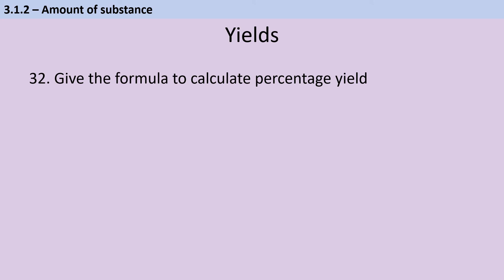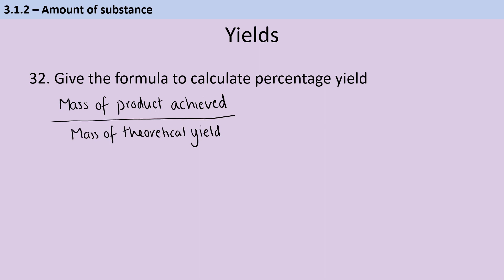To calculate percentage yield, take the mass of the product actually made, divide by the maximum theoretical yield, and multiply by 100%.